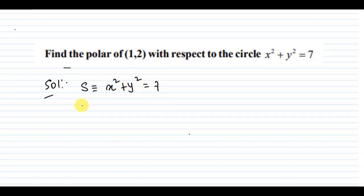So, solution. First, consider the circle as S. x squared plus y squared equal to 7 is the given circle.